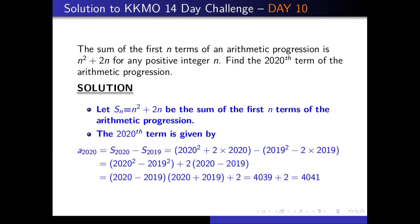The question states that the sum of the first n terms of an arithmetic progression is n² + 2n for any positive integer n. Find the 2020th term of the arithmetic progression.